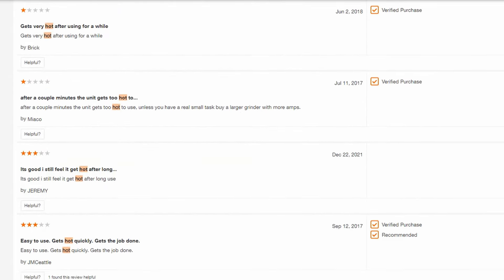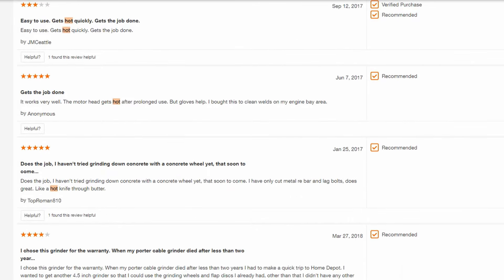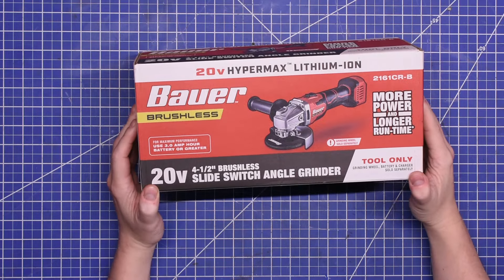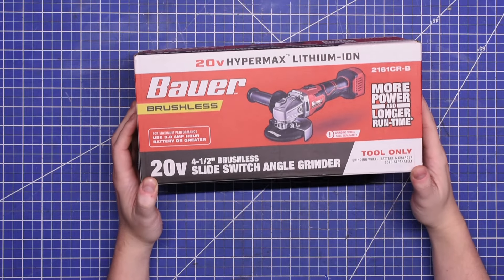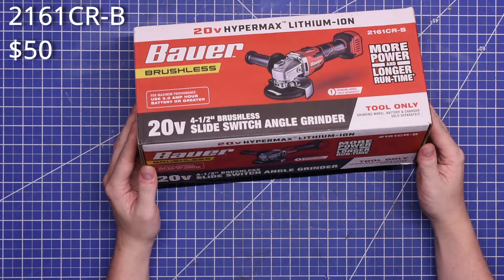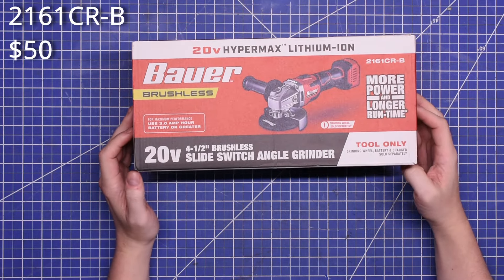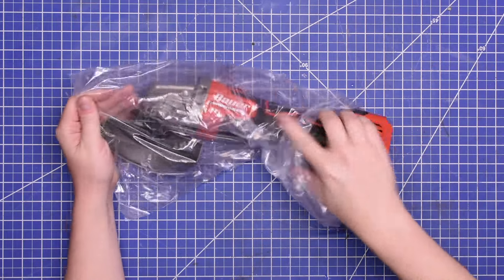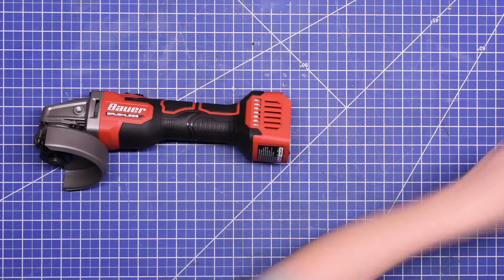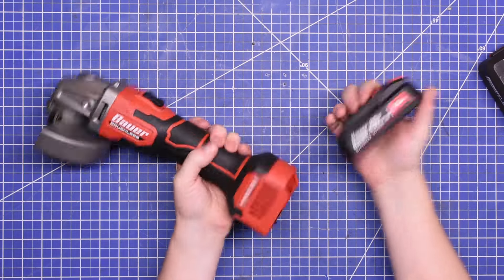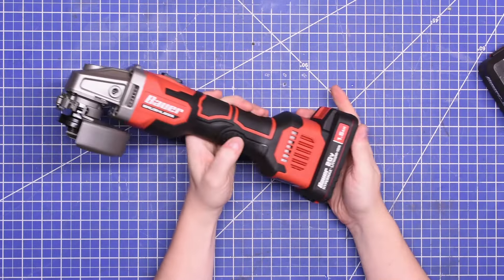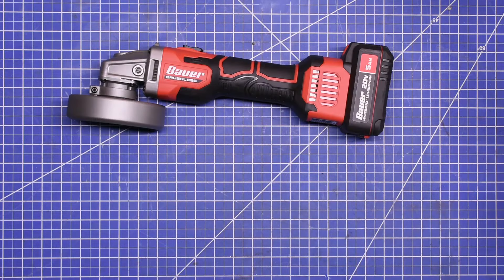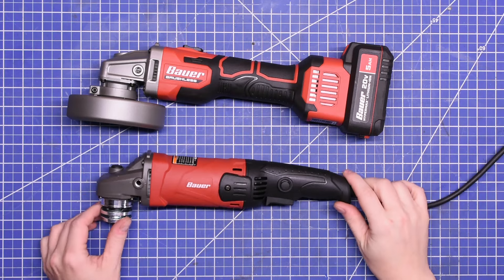Okay, on to cordless and continuing with Bauer. This is Bauer's latest brushless 20 volt angle grinder, 2161 CR-B, which comes in at a very affordable $50, or $150 if you then buy a bare 5 amp hour battery and charger. So $150 as tested here. We also have the 1.5 amp hour battery just because we're sort of curious, but it's not going to rank with this.